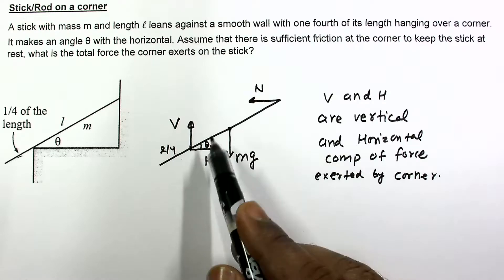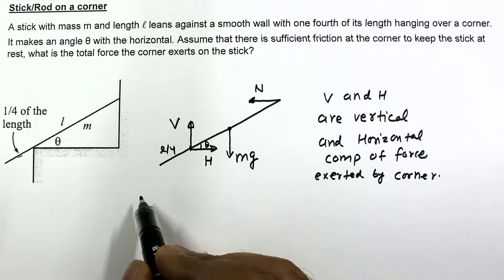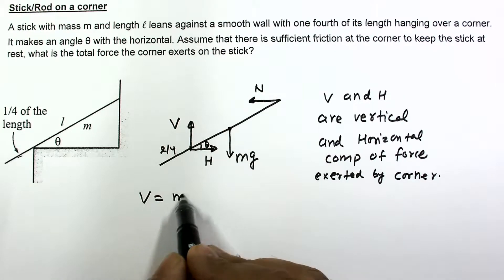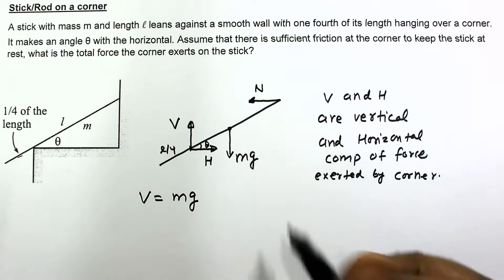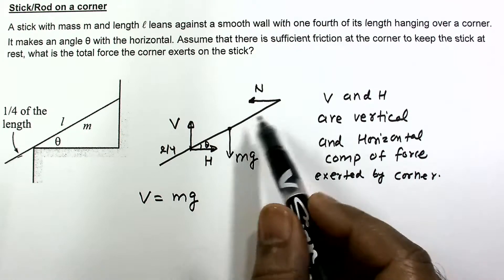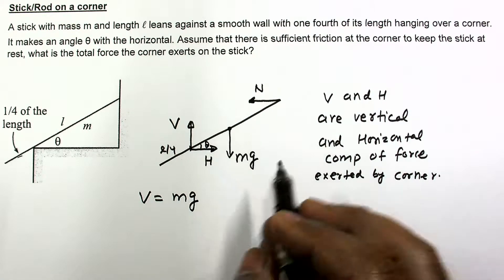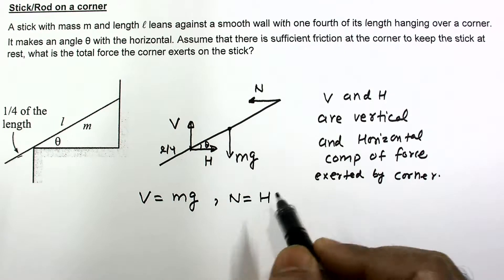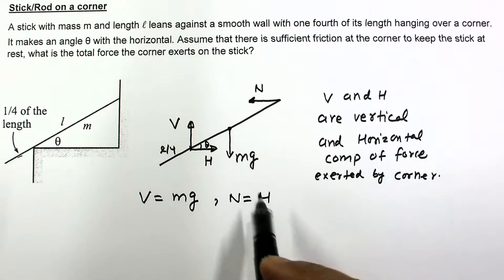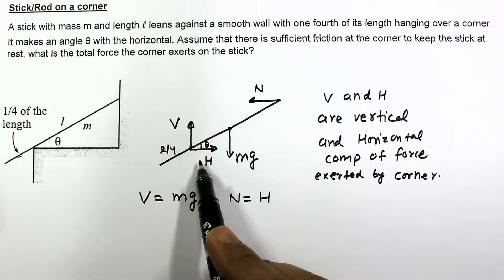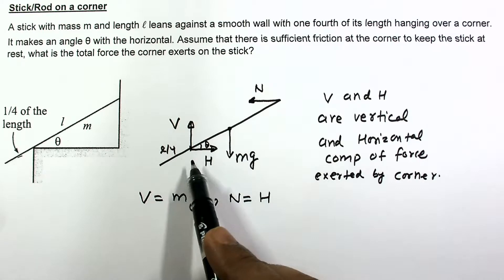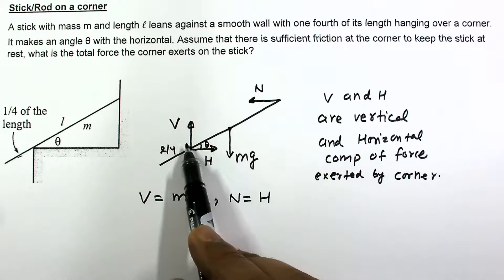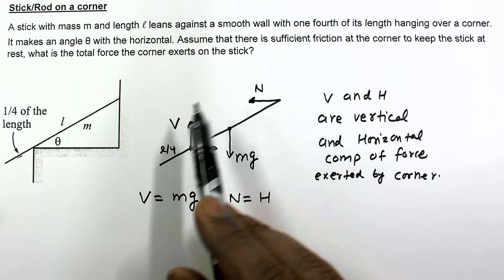From equilibrium in the vertical direction, we can write V = MG. From horizontal equilibrium, these two forces balance, so N = H. For the third equation, we write the torque equation, and for the torque equation we are free to choose any point in space.